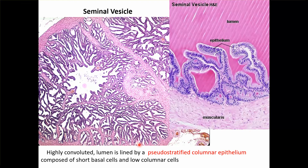Coming to seminal vesicle. It is a highly coiled structure. The lumen is lined with pseudostratified columnar epithelium composed of short basal cells and low columnar cells — the same epithelium as we saw in vas deferens.